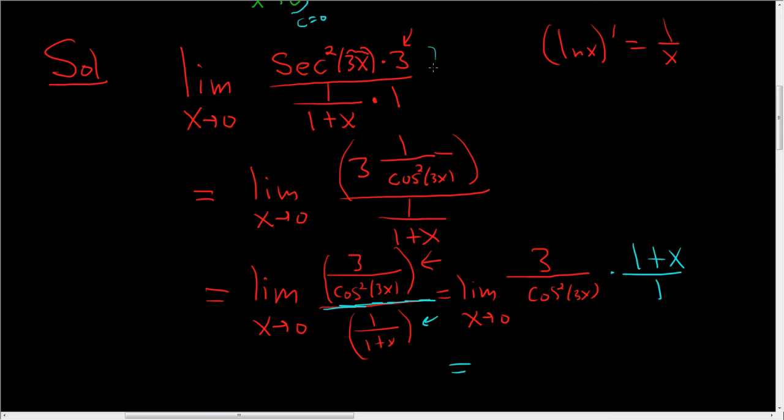We could have done it way up here. I don't know why I didn't. So this is 3, and then here we get 1 plus 0. On the bottom, we get cosine squared of 0, which is 1. Cosine of 0 is 1, so 1 squared is 1. So we just end up with 3. That's the final answer.